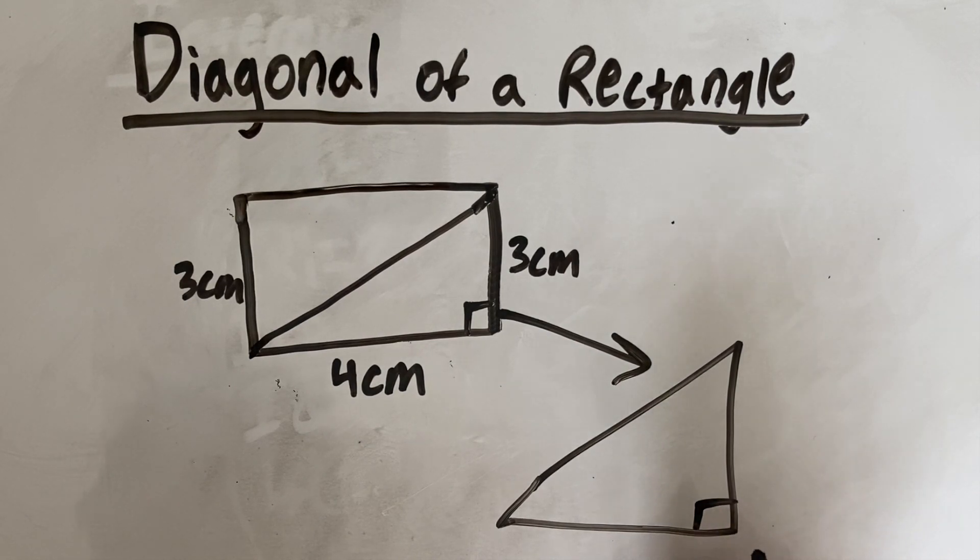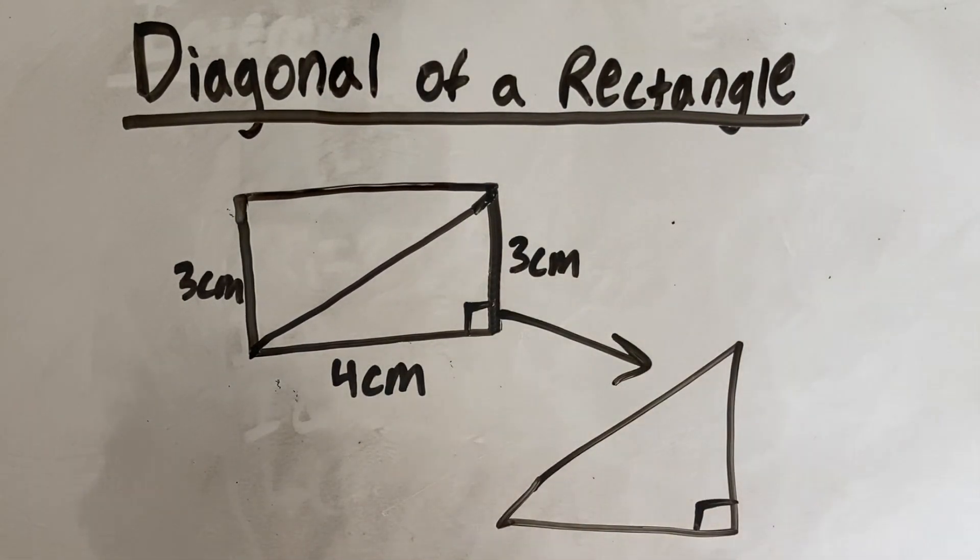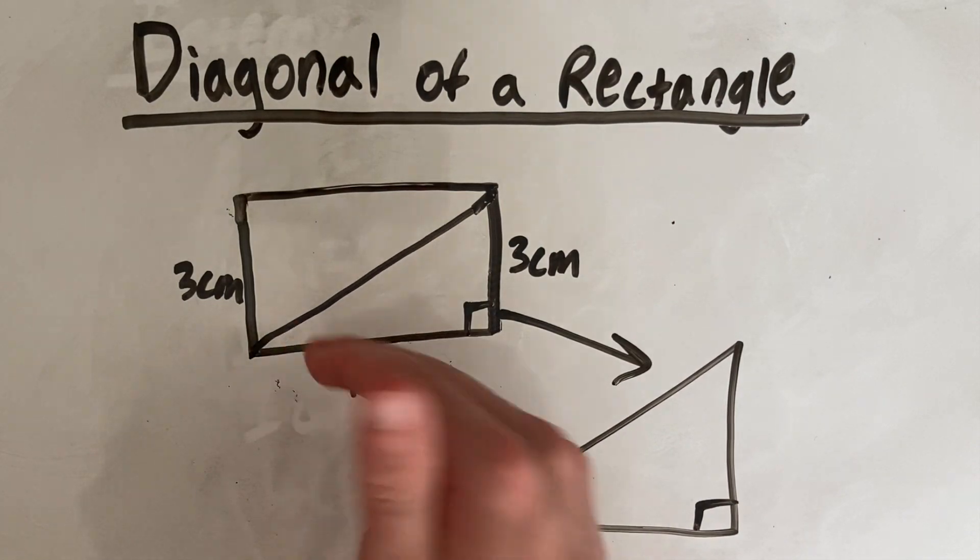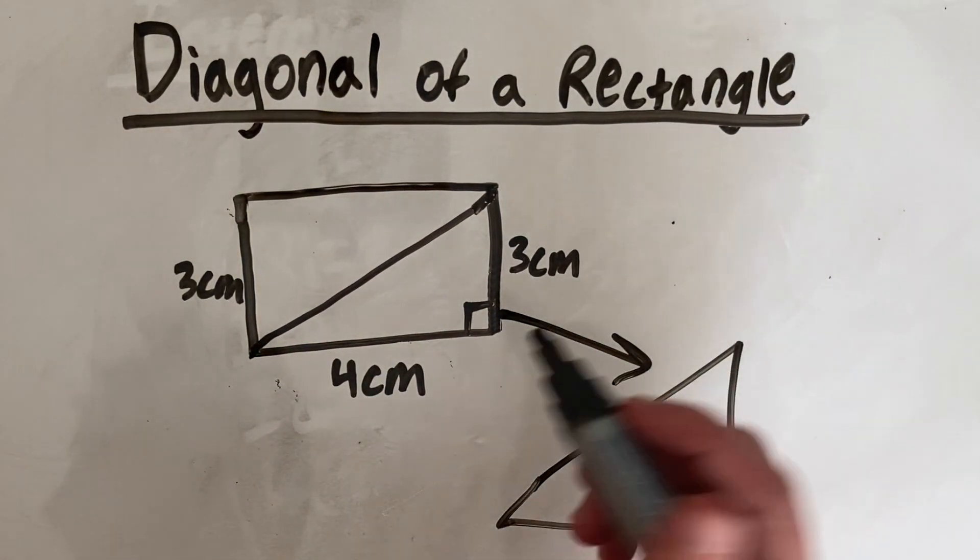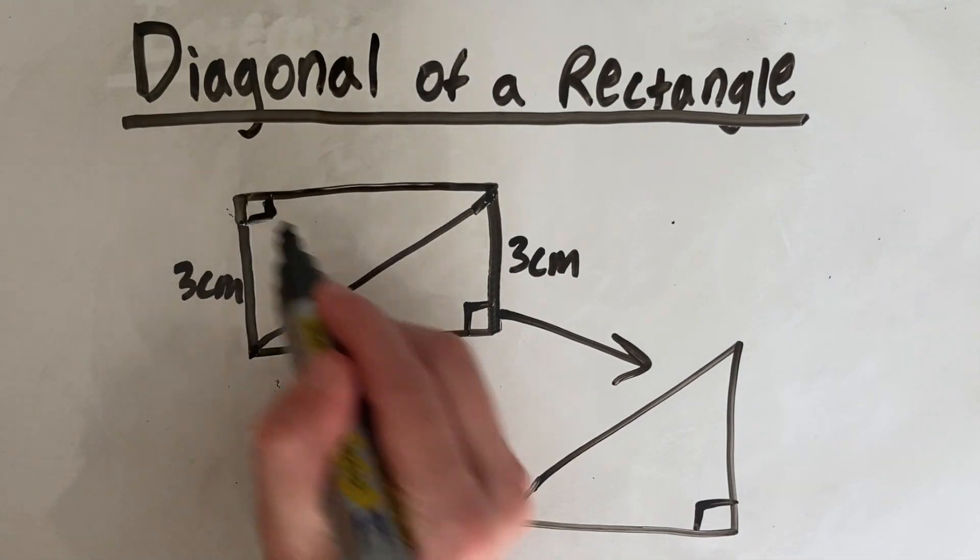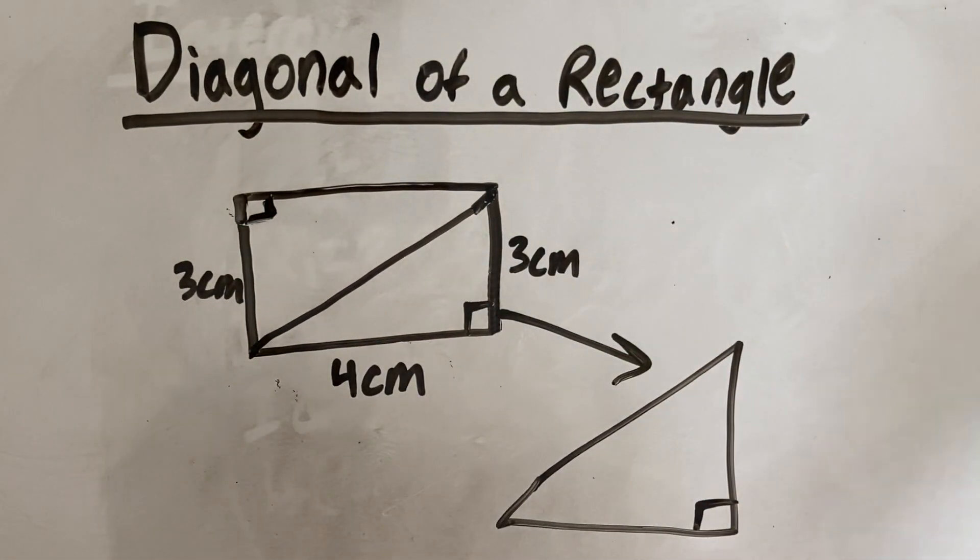remember, this is a right angle triangle, which is important because Pythagoras Theory only works when using a right angle triangle, which is good because rectangles have all right angles. So it doesn't matter if we use this corner down here or use the triangle up here, it will all be the same.